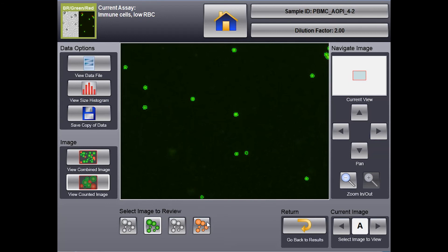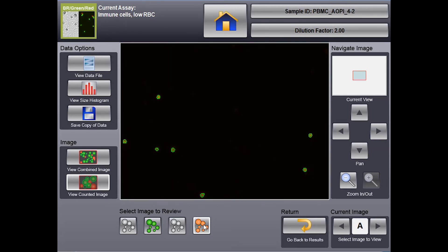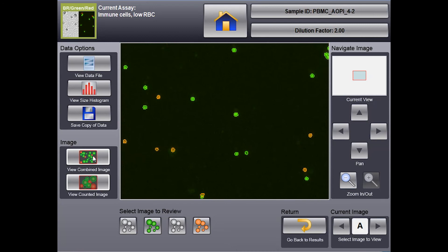You can also look at the red fluorescence image and see that the counted cells are also outlined in green. If you want to look at both of them at the same time, you can click on combined and it will circle the green fluorescent positive cells in green and the red fluorescent positive cells in red.